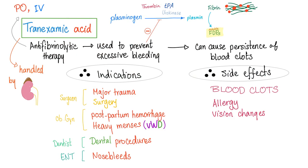Tranexamic acid is available oral or IV. It is anti-fibrinolytic therapy — it inhibits the conversion and activation of plasminogen into plasmin, thereby inhibiting fibrinolysis. That's why we call it anti-fibrinolytic therapy. Why do you use it? To prevent excessive bleeding, because it preserves the clot. What are the indications?